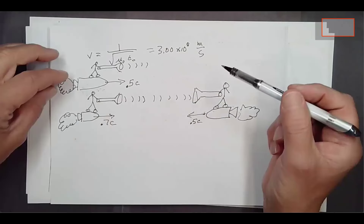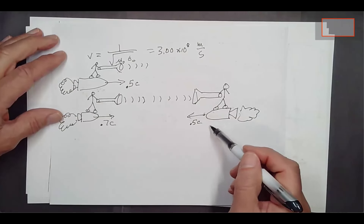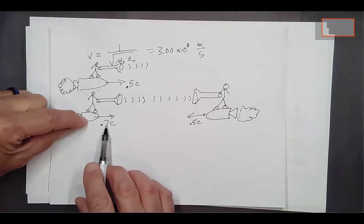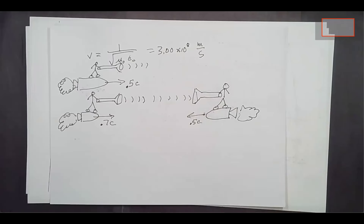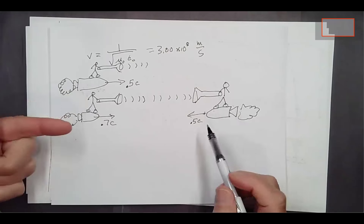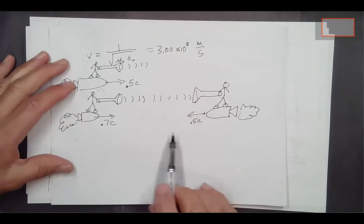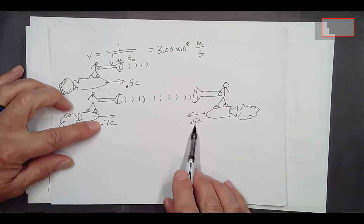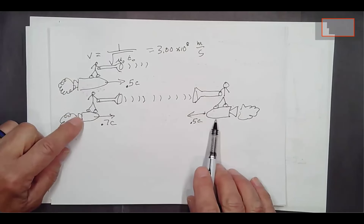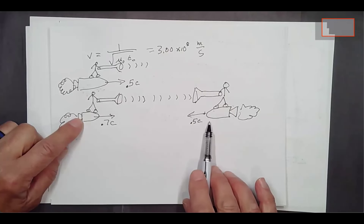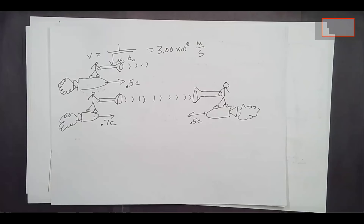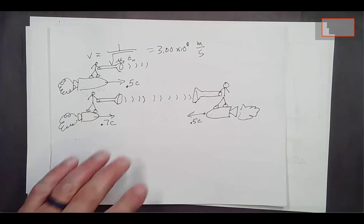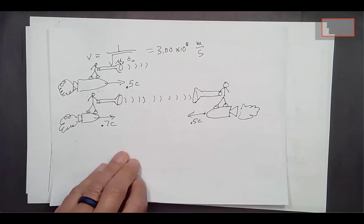Even if these two spaceships move toward each other — one at half c relative to a planet, one at 0.7c — the person still says the light arrives at the speed of light. If they measured their relative speeds to each other, it wouldn't be 1.2 times c. Einstein realized something had to give, and one of those things was the way time is measured in the two systems.